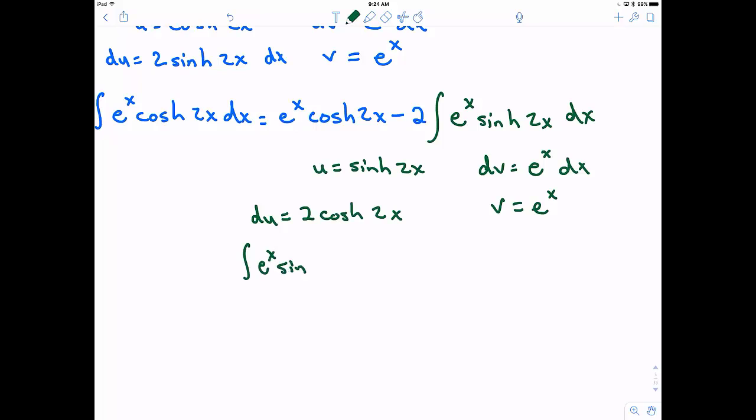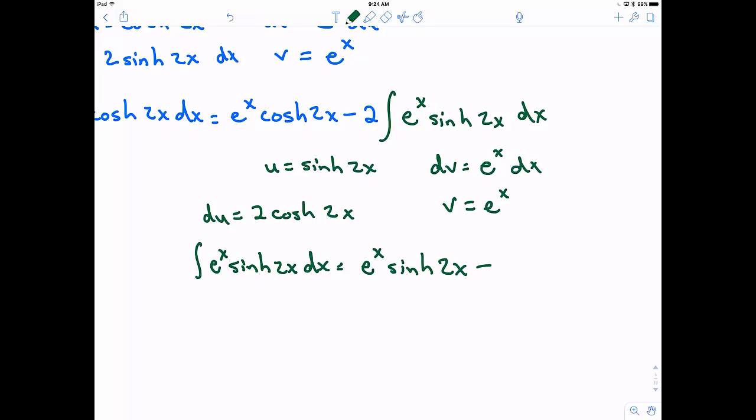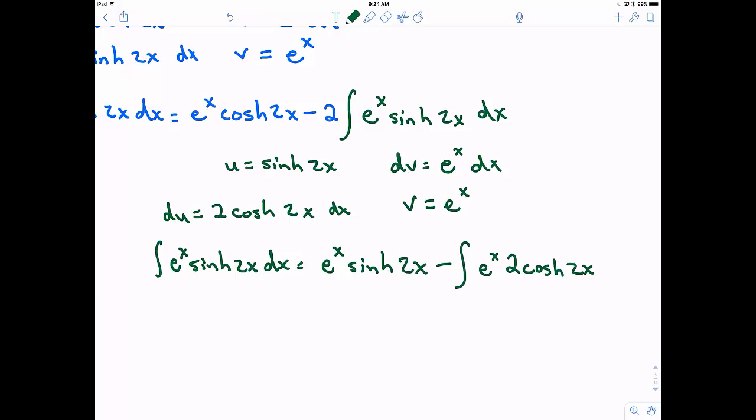So just do an integration by parts here a second time. To evaluate what is this green integral here. So e to the x sine or hyperbolic sine of 2x dx. So in this case it's uv. So I am going to write e to the x. Let's see hyperbolic sine of 2x minus the integral of v du. So e to the x and then du is 2 hyperbolic cosine of 2x. Oops I forgot my dx. There we go.